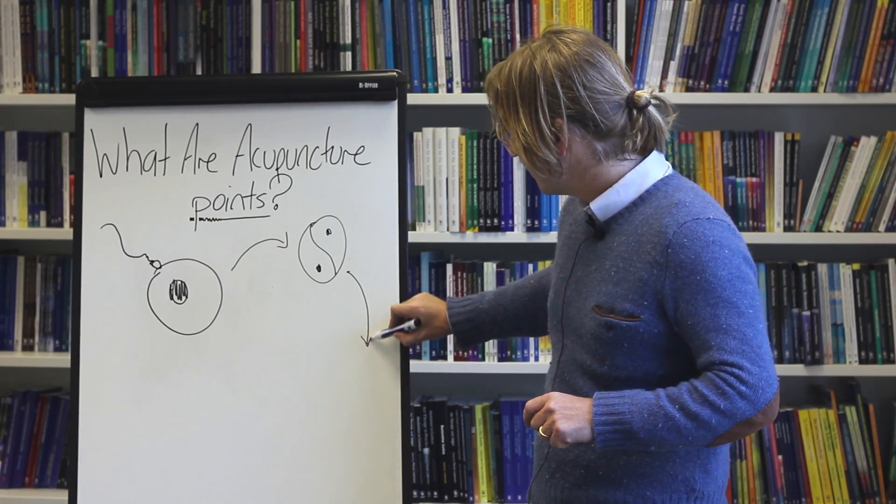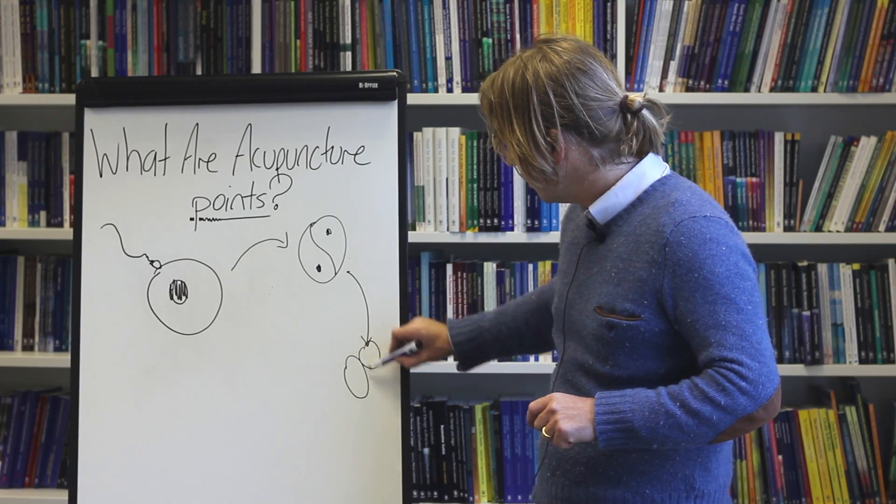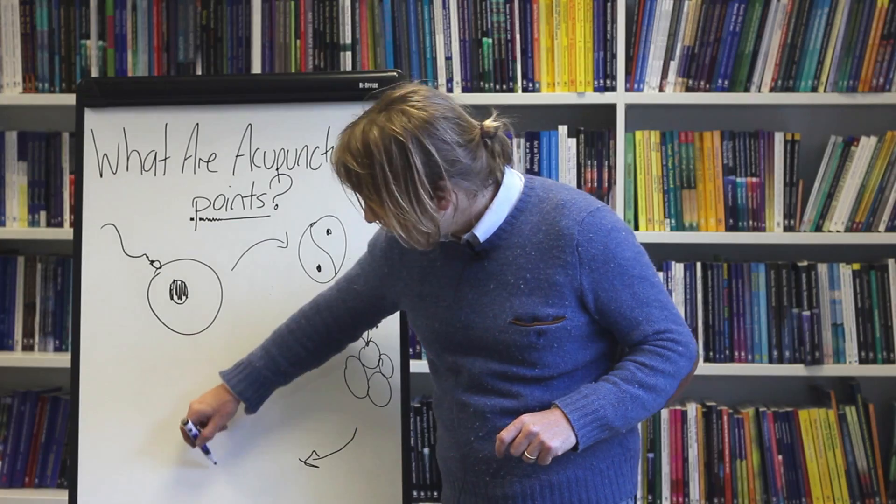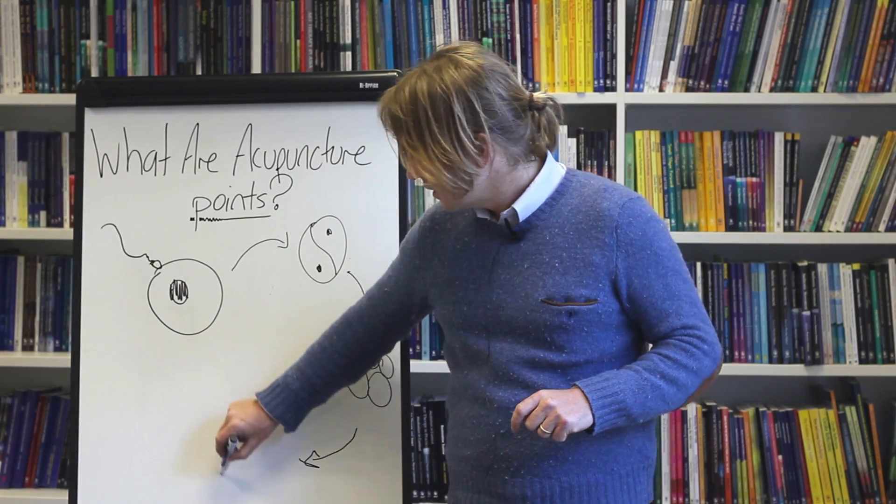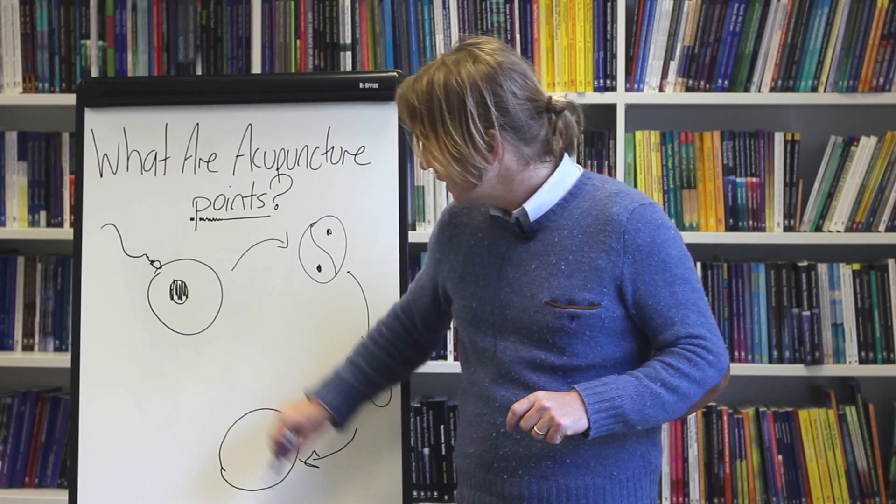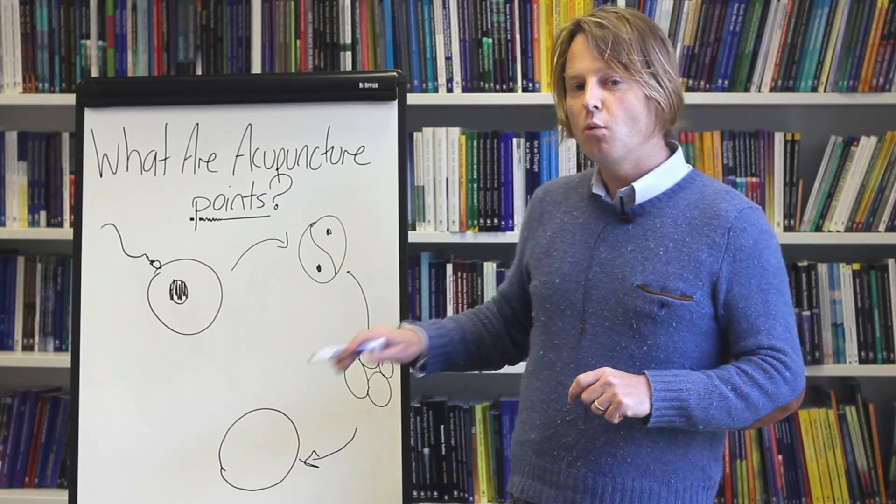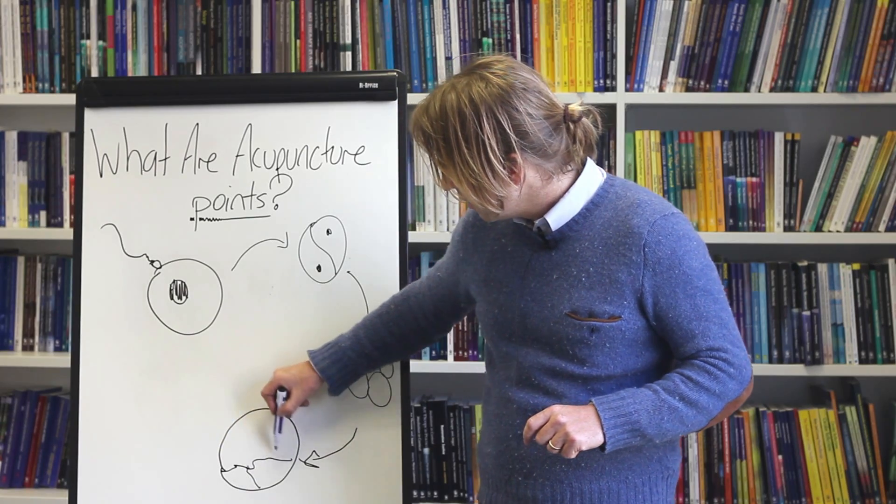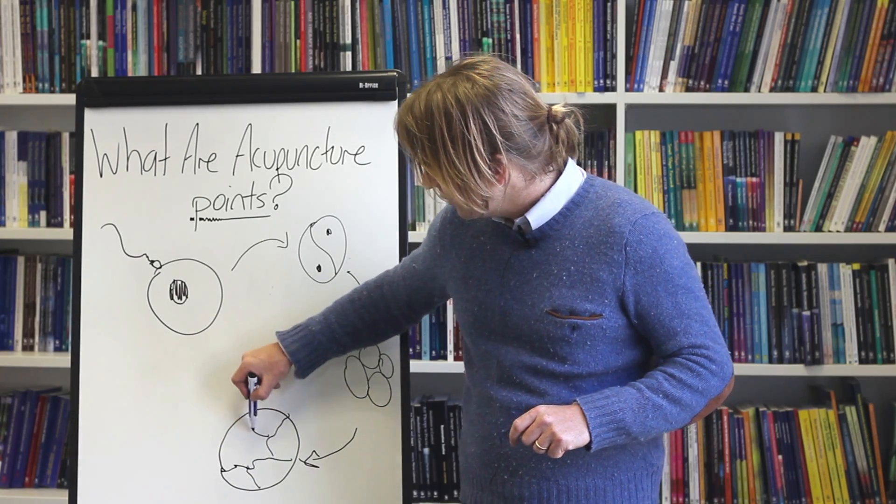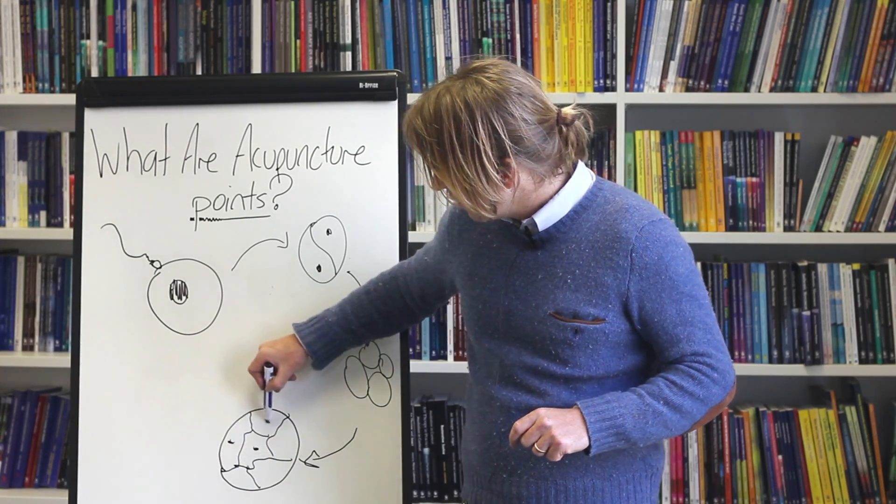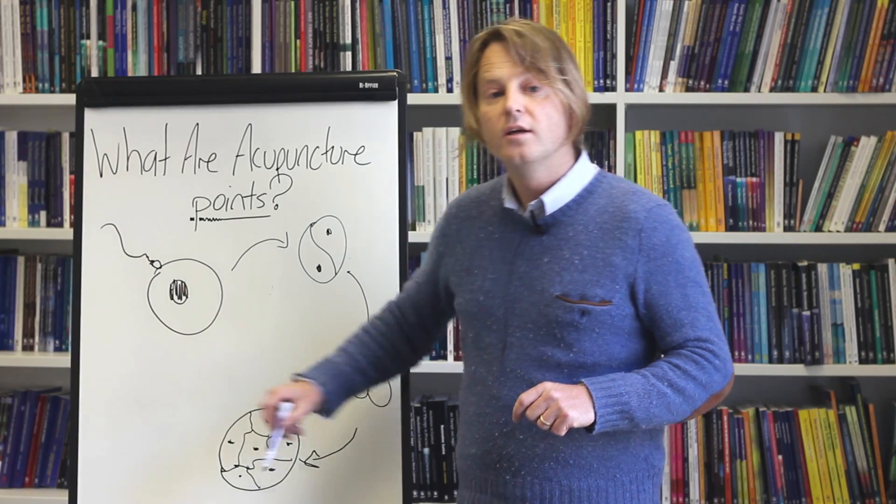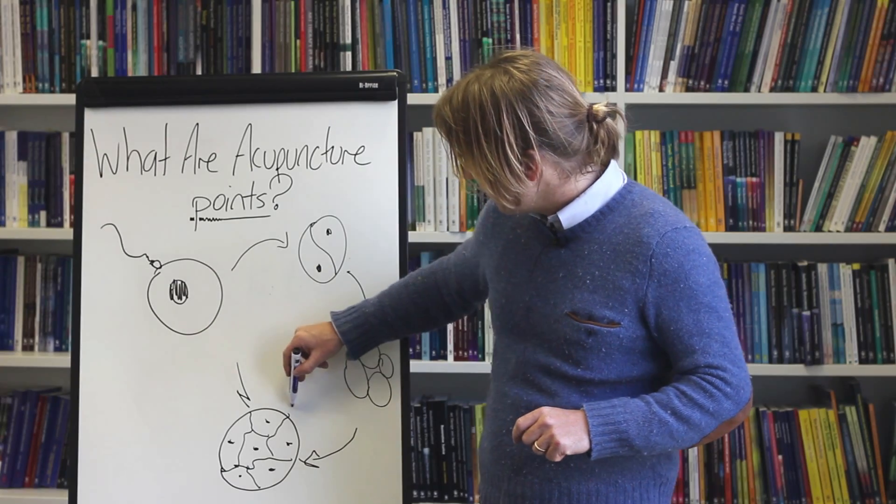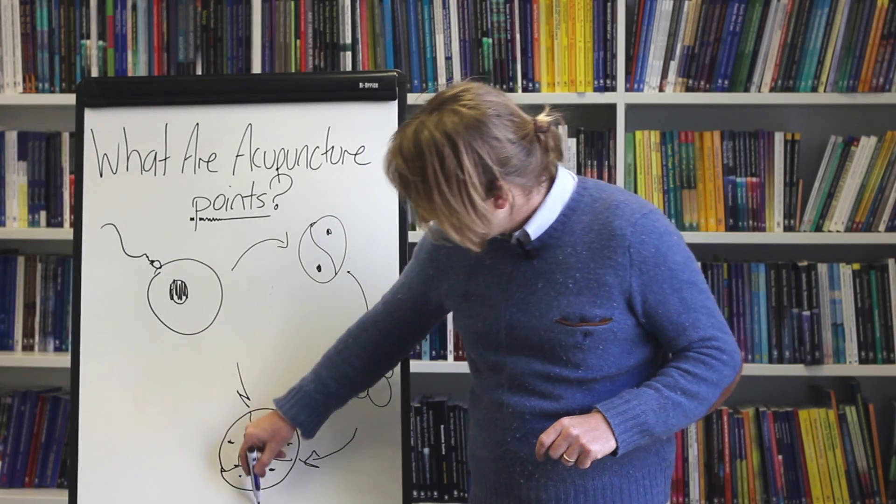Then it divides again and you have four. And again, and again, and then it does something critical. It does something called compaction. IVF scientists know well about compaction because this is the critical part where basically this ball of cells will go on to form a baby. And the thing that makes this compaction happen is electricity.